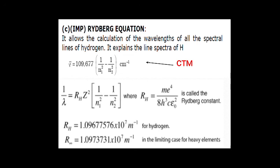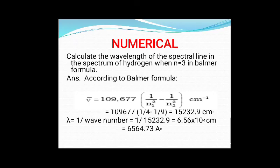Let us discuss a numerical example. Calculate the wavelength (λ) of the spectral line in the spectrum of hydrogen when n=3 in the Balmer series formula. For the Balmer series, n1 is always two, since the Balmer series is obtained when the electron jumps from a higher orbit to orbit number two. n2 is given as three. Applying the Rydberg equation: ν̄ = 109677 × (1/2² − 1/3²).